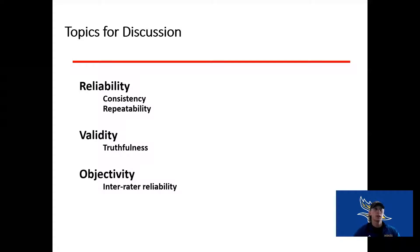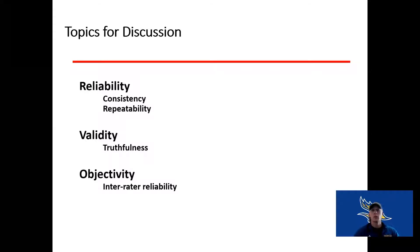Reliability is the consistency of a measurement, or the repeatability — how well you can repeat that test and measure what you're trying to measure. Validity gives us the truthfulness of that measurement. Does that measurement measure what we think we're measuring and what we want to measure?